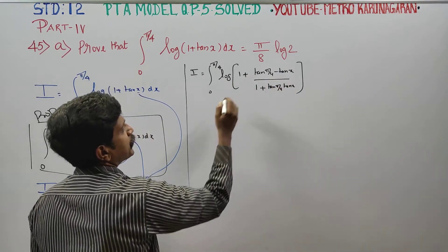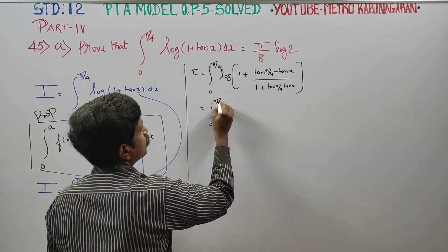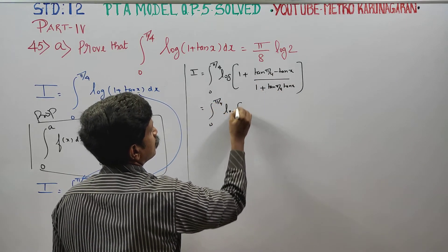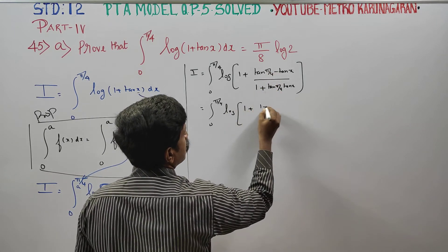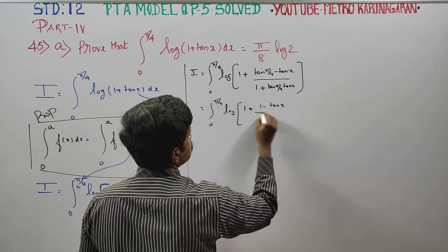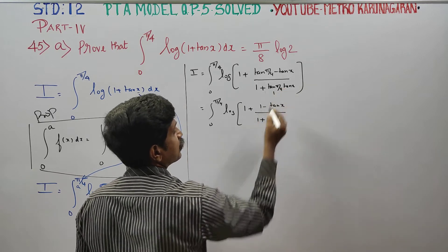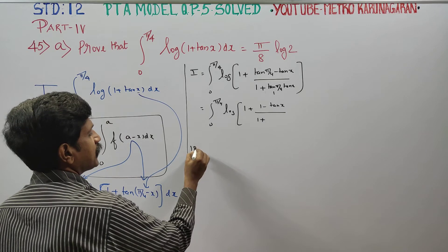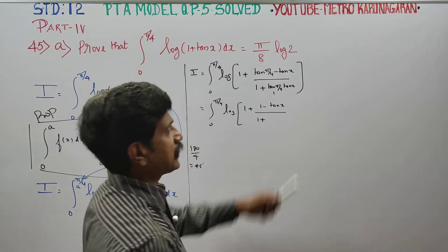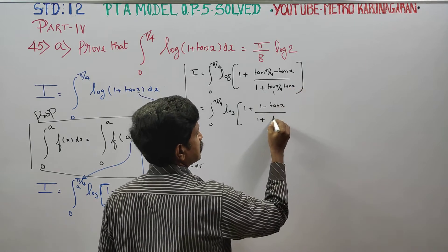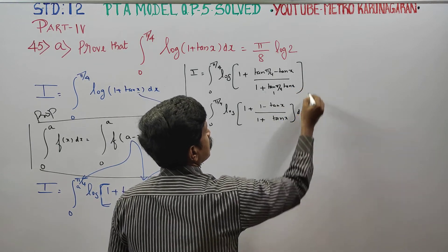Now open the formula. tan 45° = 1, and π/4 in degrees is 180/4 = 45 degrees, so tan(π/4) = 1. Substituting, I = ∫₀^(π/4) log(1 + (1 − tan x) / (1 + tan x)) dx.